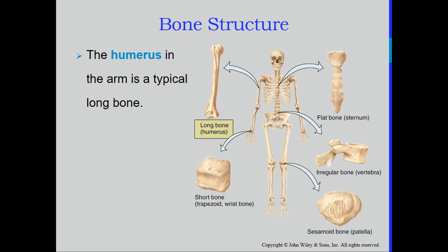sesamoid bones, and short bones. A flat bone is one that is very thin and usually much wider than it is thick. Short bones have more of a cube shape — about the same width, length, and depth. Irregular bones have a very odd shape; you can see here this vertebra has a body and processes that come off. But right now we're going to focus on the long bone.